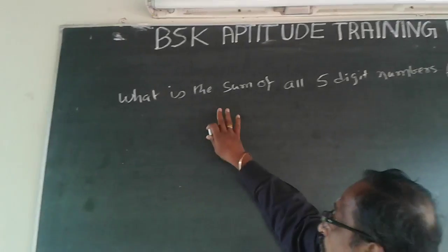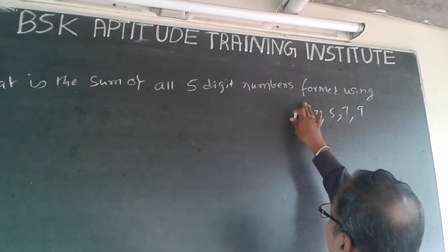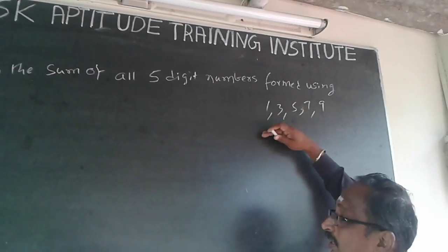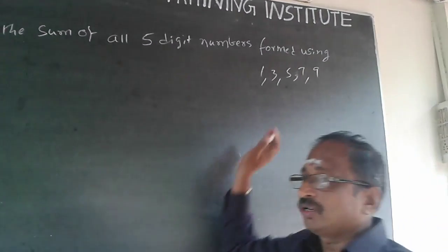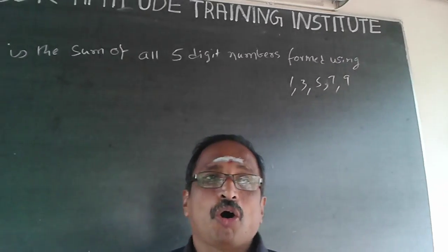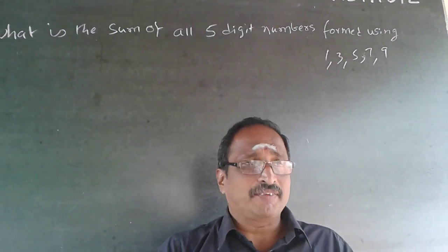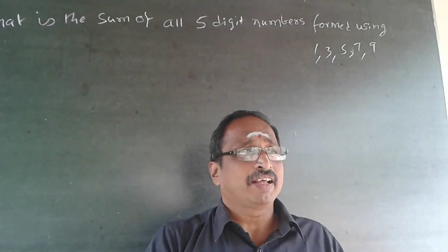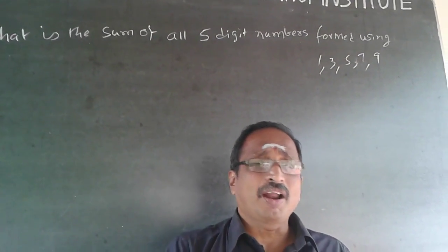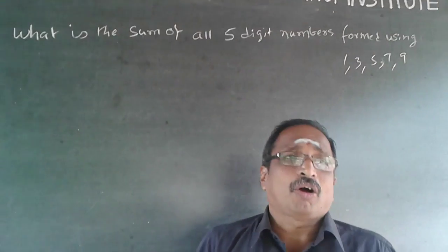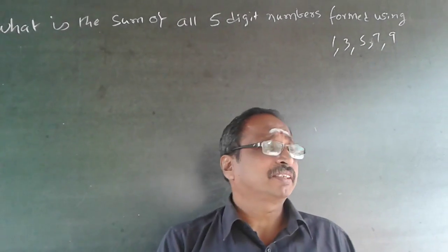The question is: what is the sum of all five-digit numbers formed using 1, 3, 5, 7, and 9? This implies you will have to use all five numbers in your five-digit number. Let's total all that and find the answer — it's a very tough ask.